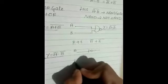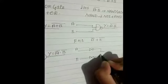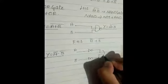Right hand side: a bar plus b bar. A is combined with a NOT gate, b is combined with a NOT gate, and both a bar and b bar are combined with an OR gate. So the output is y equal to a bar plus b bar.